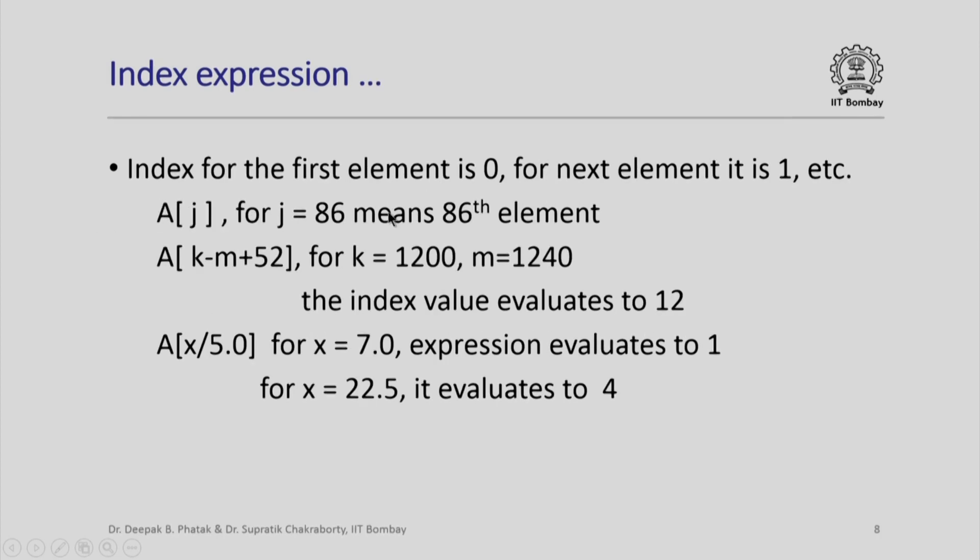An index for the first element is 0, next element is 1, and so on. For example, a[j] is a valid expression. For j equal to 86, it will be the 86th element. Suppose I use an expression k minus m plus 52, and if k is 1200 and m is 1240, then the index value evaluates to 12.